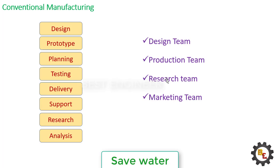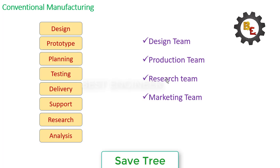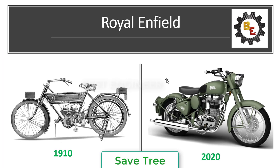These are the steps involved in the conventional manufacturing process. For continuous improvement from the manufacturing process, additive manufacturing technology has been developed. For example, just look at these two pictures — this is a product of Royal Enfield. In 1910, Royal Enfield introduced a motorcycle like this.